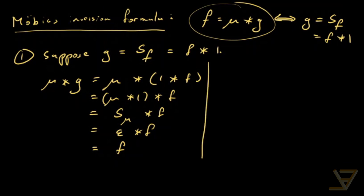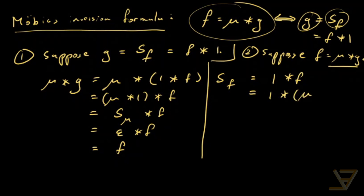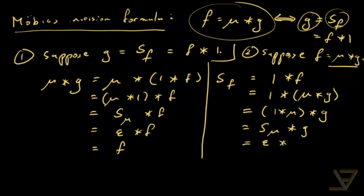In the other direction, suppose f = μ★g. We want to compute the summation function of f and show it equals g. The summation function of f is 1★f by commutativity. Substituting, we get 1★(μ★g). By associativity this is (1★μ)★g. Now 1★μ is the summation function of μ, so we get S(μ)★g = ε★g, and that equals g since ε is the identity.